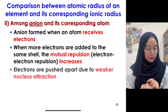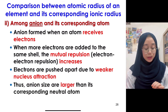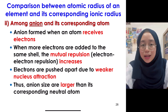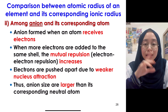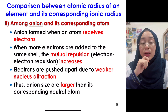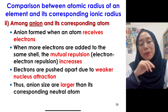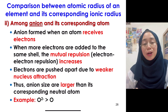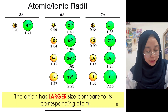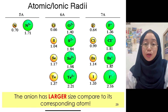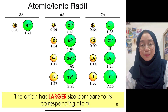Electrons are pushed apart due to the weaker nucleus attraction, so the size of the anion is larger than its corresponding neutral atom. When explaining anions compared to their own atom, we talk about mutual repulsion between the valence electrons — not ZEff or shielding effect. For example, the oxide ion is larger than the oxygen atom. As you can see, anions are always larger than their corresponding atoms.